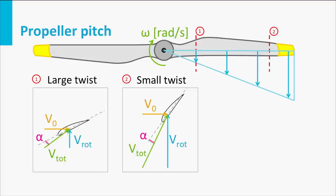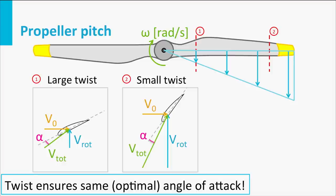The forward speed V0 is a vector component in the total speed, and this varies; the rotation speed can also vary. That is the reason why you sometimes want to change the propeller pitch — to ensure an optimal angle of attack at all times and maintain the highest propeller efficiency. That covers the aerodynamic perspective of the propeller blade as a little wing and how it can be optimized.